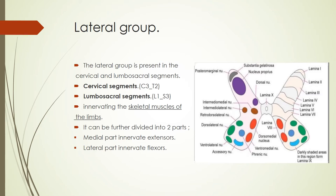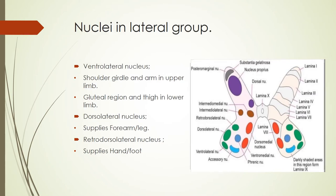The medial part of the lateral group innervates extensor muscles while the lateral part innervates flexors. The lateral group consists of several nuclei: the ventrolateral nucleus, which supplies the shoulder girdle and arm in the upper limb and the gluteal region and thigh in the lower limb; the dorsolateral nucleus, which supplies the forearm in the upper limb and part of the leg in the lower limb; and the most posteriorly situated nucleus called the retro-dorsolateral or post-posterolateral nucleus.